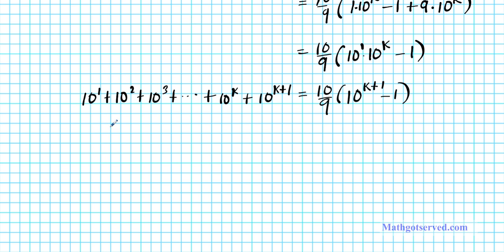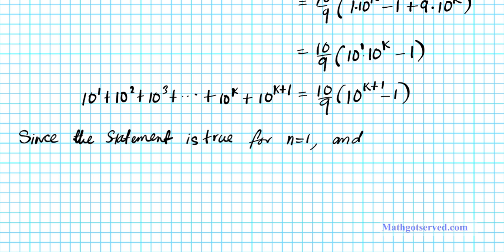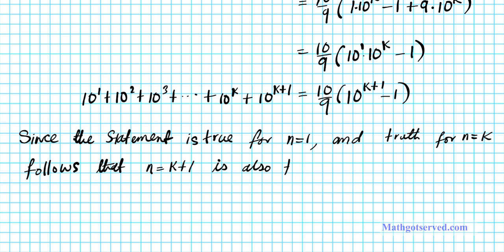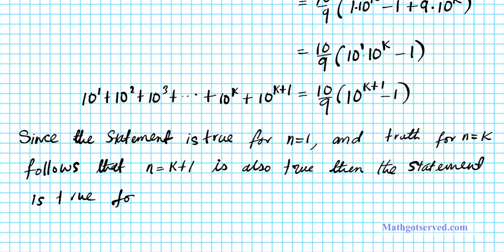In conclusion, since the statement is true for the first case for n equals 1, and truth for n equals k follows that n equals k plus 1 is also true, the original statement is true for all positive integers n. Let's put a box of accomplishment to show that we're done with our proof.